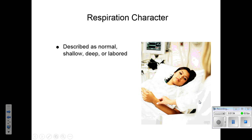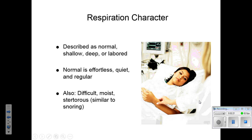The respiratory character can be described as normal, shallow, deep, or labored. Shallow is when there's not a lot of air being taken in with each respiration. Deep is when the respiration seems almost exaggerated. Labored is when the patient is obviously working at breathing. Normally it's effortless, quiet, and regular. There's also difficult breathing, moist breathing — where the patient sounds wet or bubbly — and stertorous, which is the sound of snoring, a very obstructed breathing, as if something were stuck in the throat.